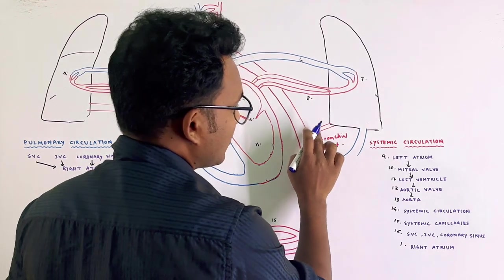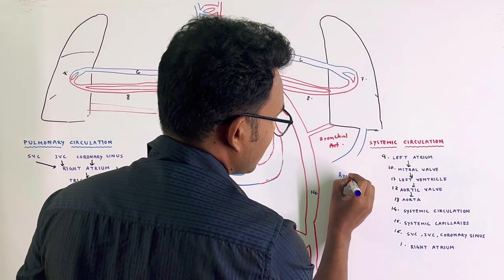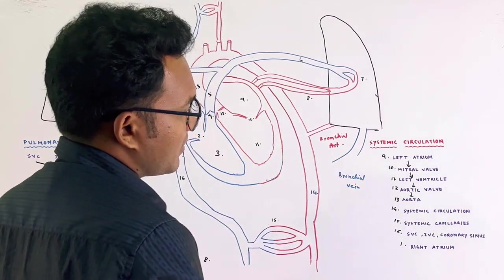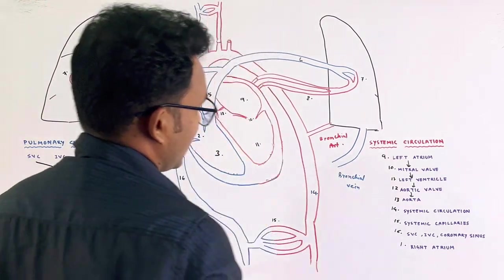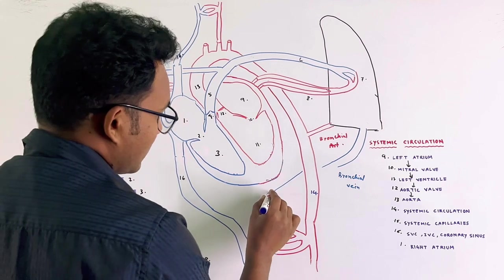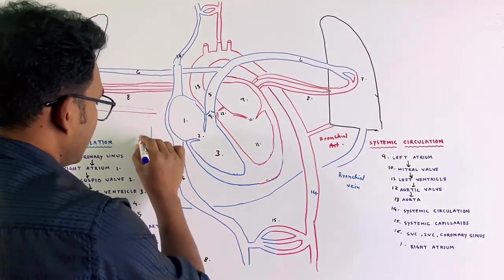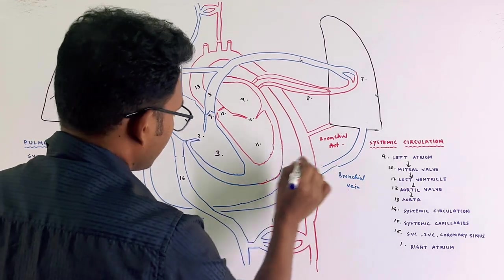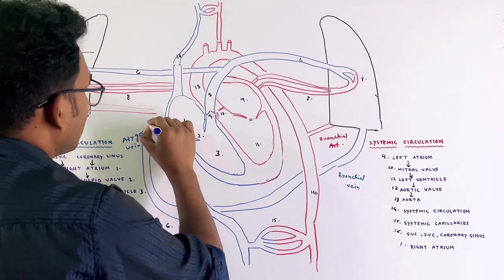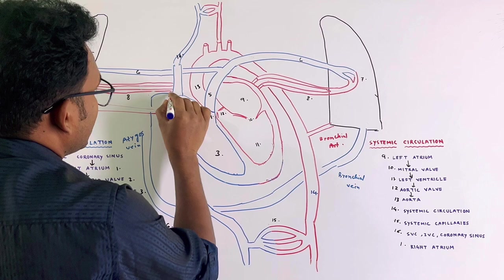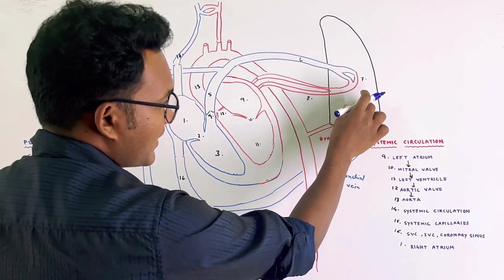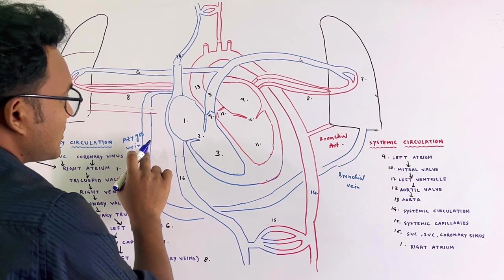The bronchial veins drain deoxygenated blood from the lung tissue. The bronchial veins drain the majority of blood into the azygous vein. The azygous vein then drains into the superior vena cava, which returns the deoxygenated blood to the right atrium.